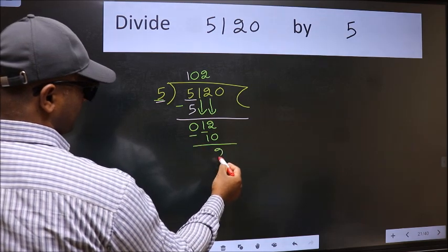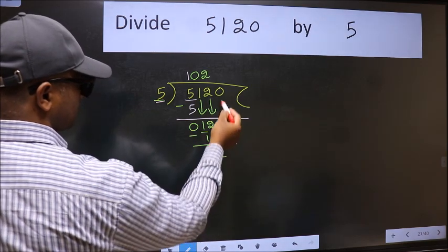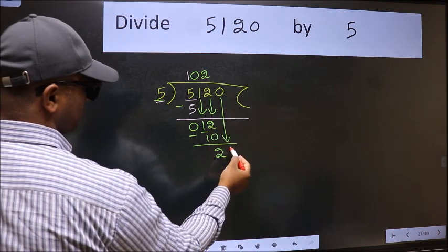Now we subtract. We get 2. After this, bring down the beside number. So 0 down.